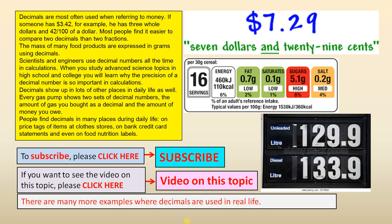Decimals are most often used when referring to money. If someone has $3.42, for example, he has three whole dollars and 42 over 100 of a dollar, that is 42 cents.